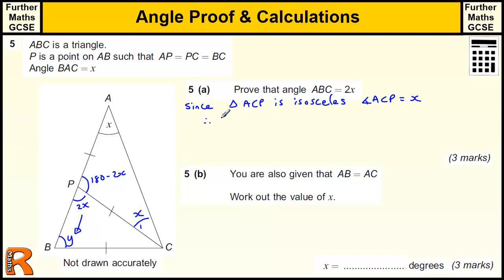Therefore, angle APC equals 180 minus 2X since angles in a triangle add to 180. And then we did this. We worked out this angle here. So angle BPC equals 180 minus 180 minus 2X, which is equal to 2X since angles on a line add to 180.